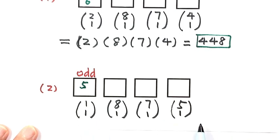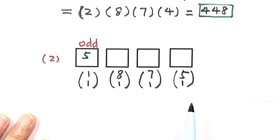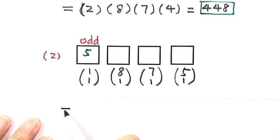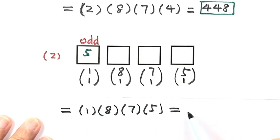Combining all possibilities, that's 1 choose 1 times 8 choose 1 times 7 choose 1 times 5 choose 1. So we have 1 times 8 times 7 times 5, which gives us 280.